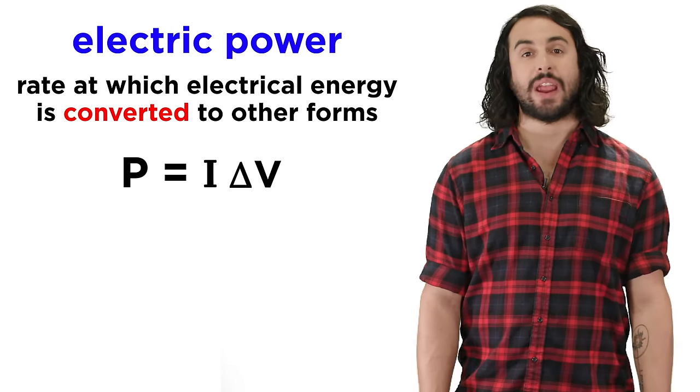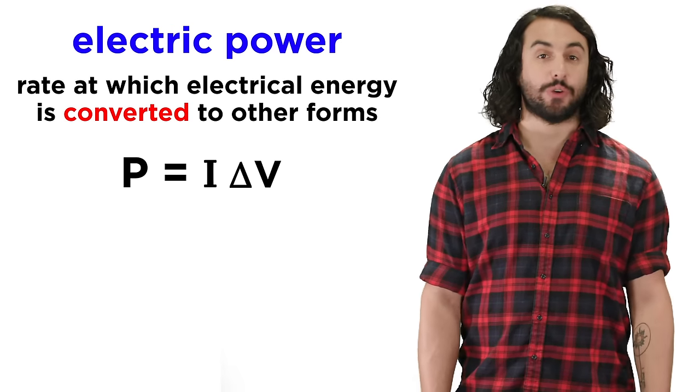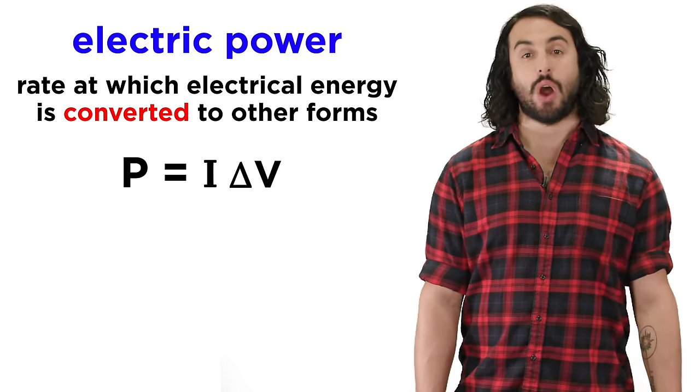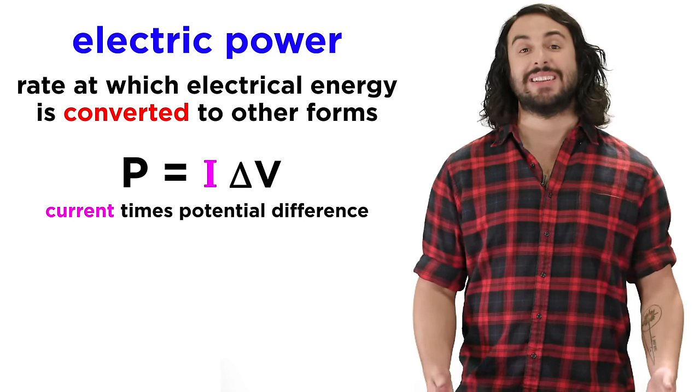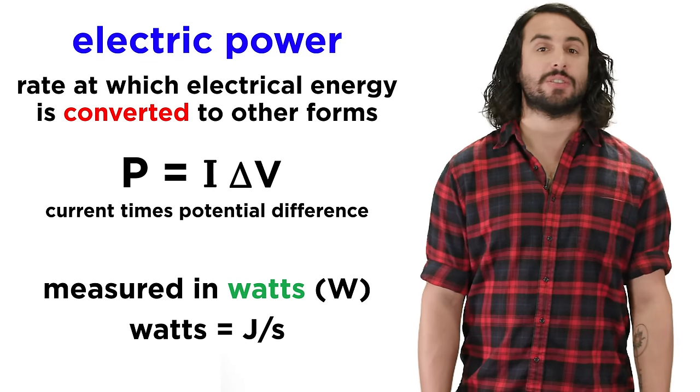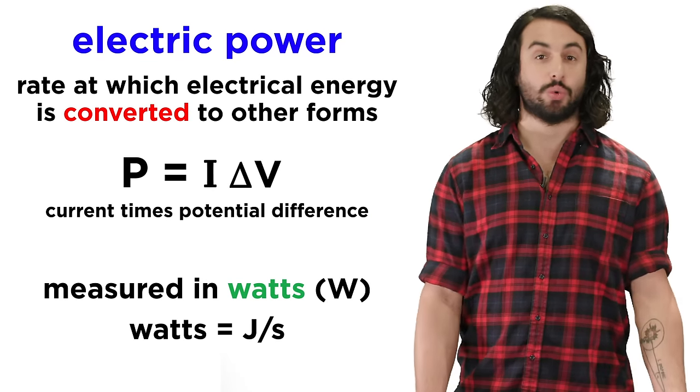Electric power, which is the rate at which charge carriers convert electrical potential energy to other forms of energy, is given by current times potential difference, which is measured in watts, or joules per second.